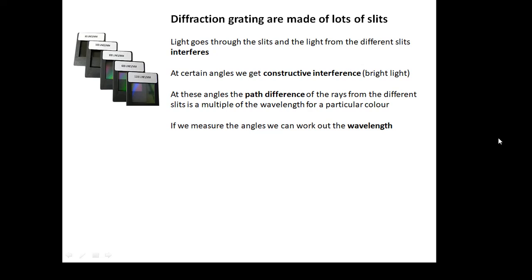And that's because the path difference for the different slits at these angles means that the waves of light arrive in phase. We get constructive interference. And if we work out the angles, if we measure the angles at which we get constructive interference, then we can work out the wavelength of the light.